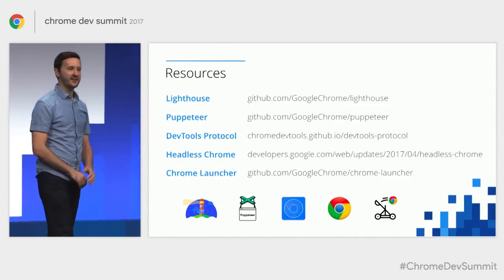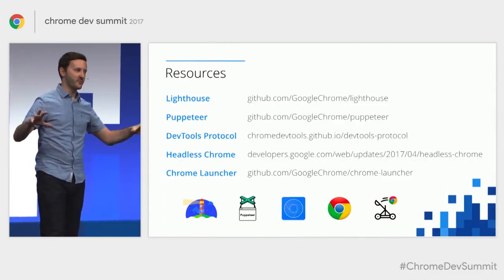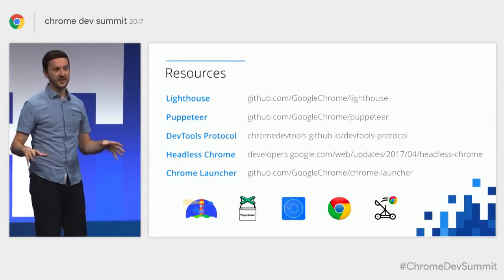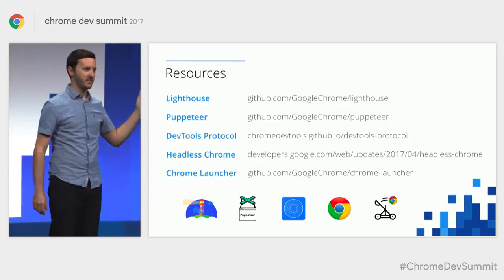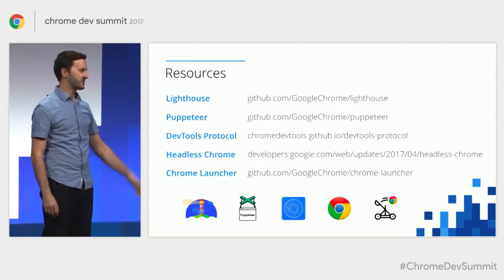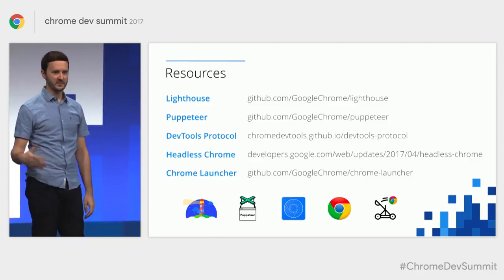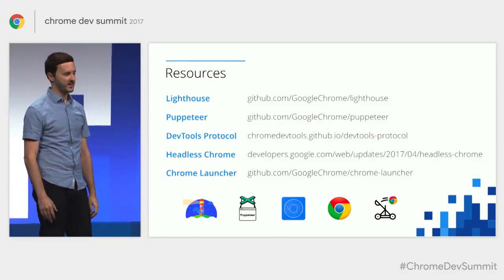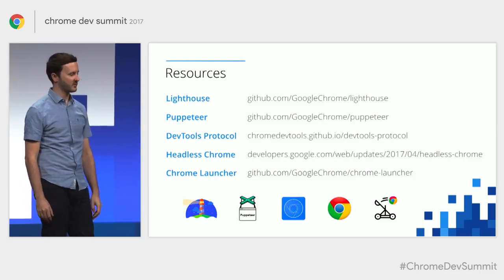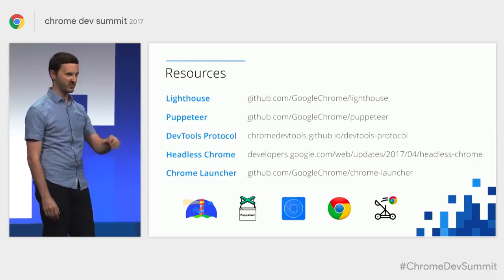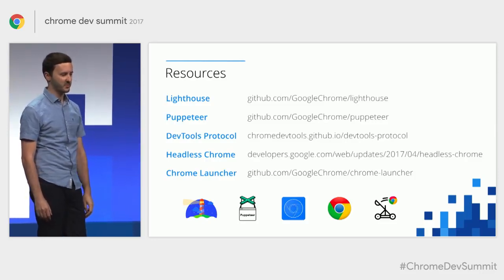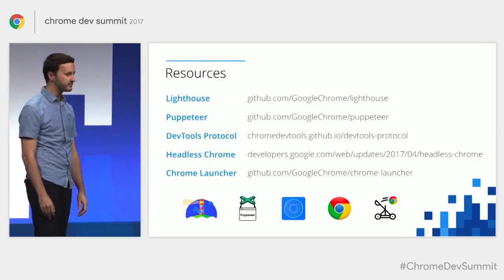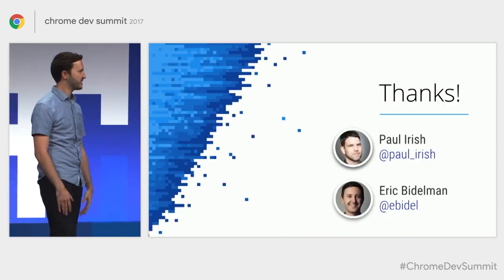Sorry for going over — hope you guys learned a lot today. We did cover a lot in a short period of time. Here are all the resources: the GitHub repos for Lighthouse and Puppeteer, the Headless Chrome article, DevTools protocol if you want to get low level, and the Chrome Launcher module. Thank you all.